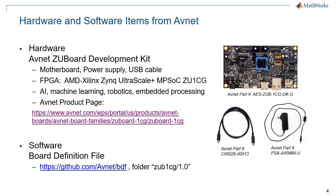To set up the project, you'll need some hardware and software items from Avnet Electronics. The first is the Avnet ZU board development kit, pictured on the right. This comes as a motherboard, a power supply, and a cable. The AMD Xilinx Zynq UltraScale+ MPSoC is the FPGA device used for this board. This platform is great for artificial intelligence, machine learning, robotics, and embedded processing.